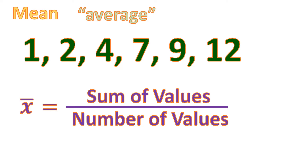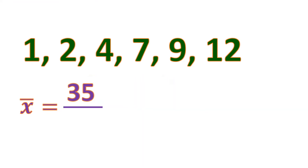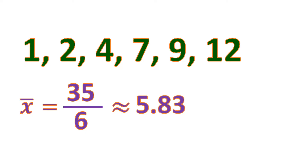Let's try to solve it. The sum of the numbers, if you add them all, is 35, divided by how many numbers there are, which is 6. We use a calculator to solve this. This is only approximately — we cannot put the exact value because it is an infinitely long number. So we have to round off, and when we round off we use the approximately equal symbol. This is approximately equal to 5.83, because the exact value is 5.83333 and so on. We round off to two decimal places.